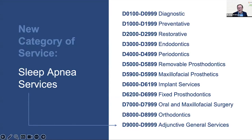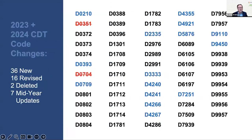Looking at a summary of 2023 and 2024 code changes: the blue ones are revisions, the red ones are deletions, and the black ones are brand new codes. That's quite a few changes across just two years. Since 2020, we're talking about 200 code changes total. Be sure you're keeping up with these, using a current coding resource that tells you what the changes are, how to use the new codes, and what to expect from payers.